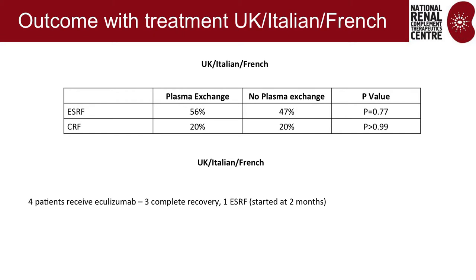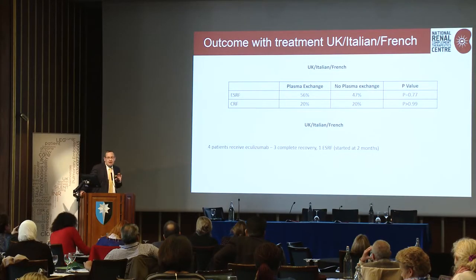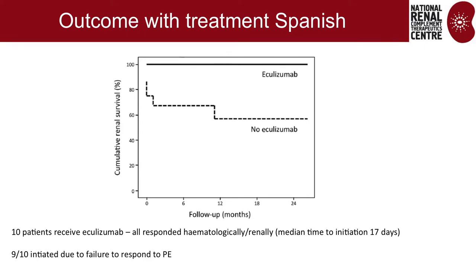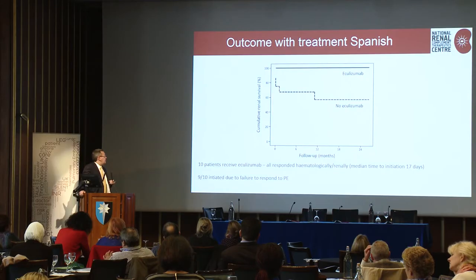Looking at outcome by treatment, plasma exchange seems to make absolutely no difference — after excluding ADAMTS13-deficient TTP, about half developed end-stage renal failure and 20% developed chronic renal failure, regardless of whether plasma exchange was used. In the TriNation study, only three patients received eculizumab promptly and all of them recovered. In the Spanish group, far more were treated with eculizumab and everybody treated with it recovered, while those who didn't get eculizumab had about a 50% end-stage renal failure rate.